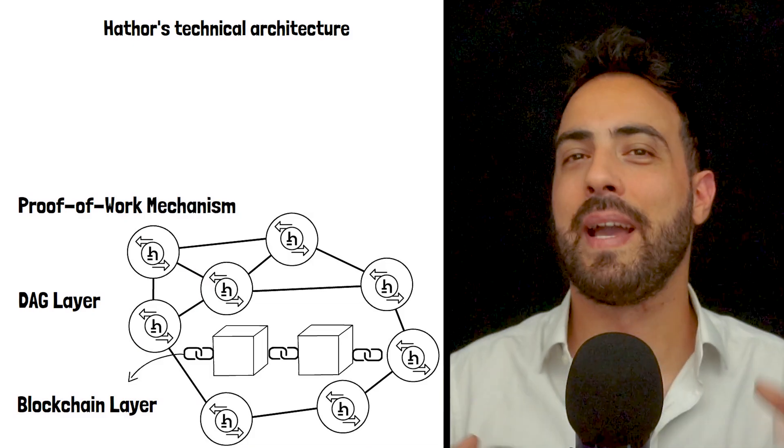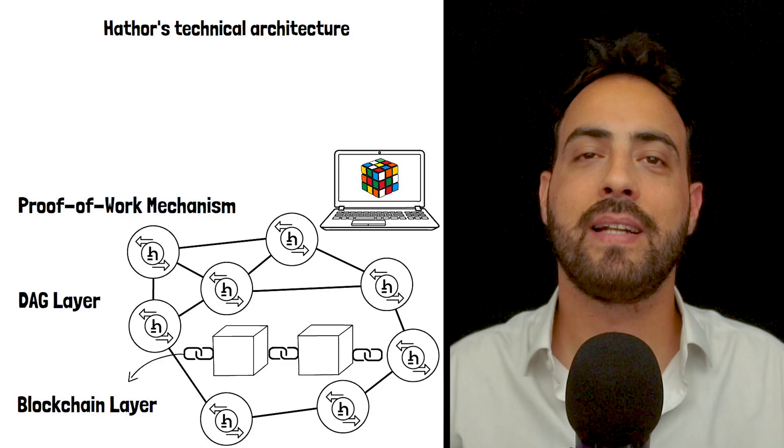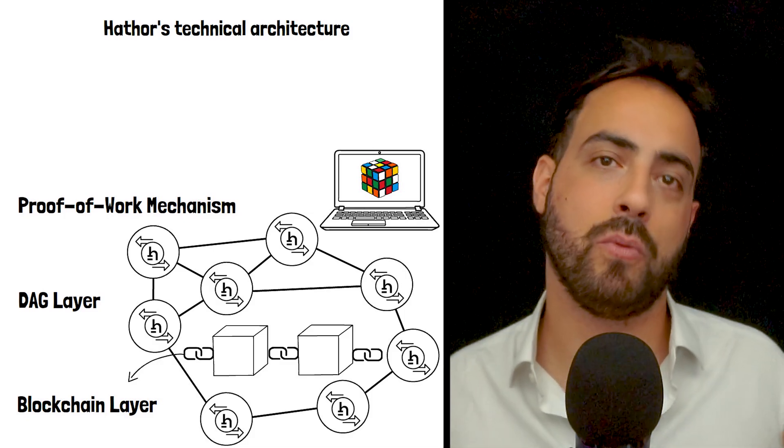The proof-of-work mechanism requires both transactions and blocks to complete proof-of-work, but at different difficulty levels. This distributes security across the entire network.